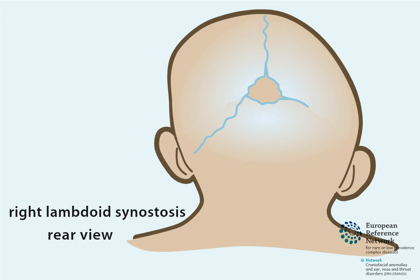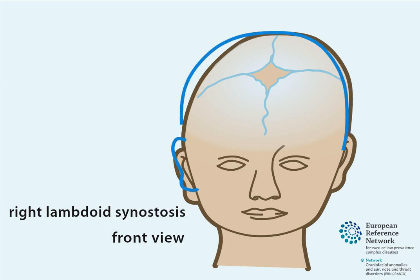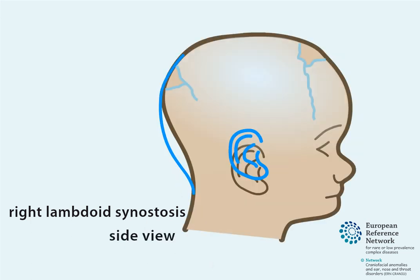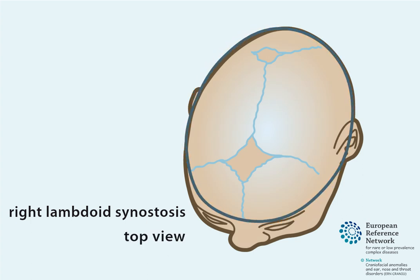Left lambdoid synostosis can also occur when the lambdoid suture on the left side of the head closes prematurely. In lambdoid synostosis, growth of the skull base affects the face anatomy with secondary distortion or asymmetry, otherwise called facial scoliosis. From the side, a slightly lower position of the ear can be noticed on the affected side. From the top view, the asymmetry at the back of the head is visible, also known as posterior plagiocephaly.